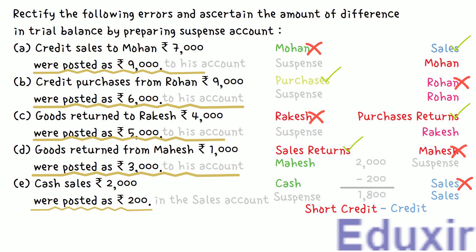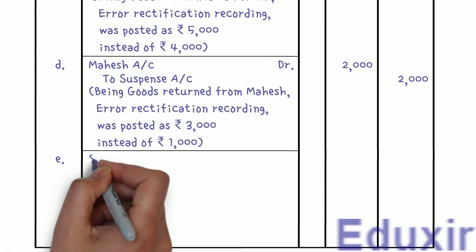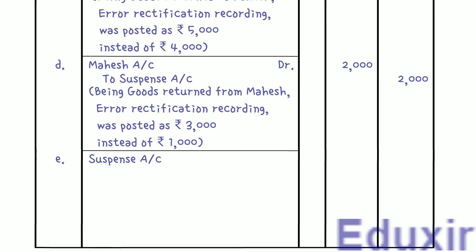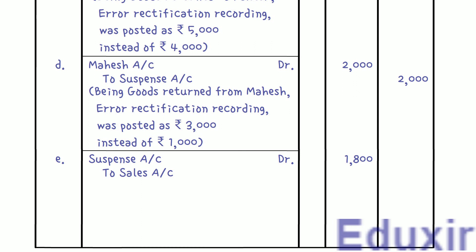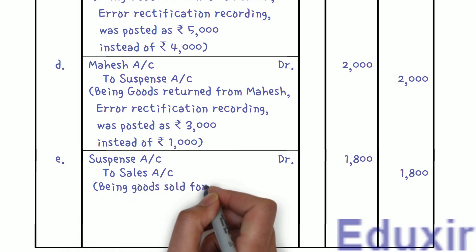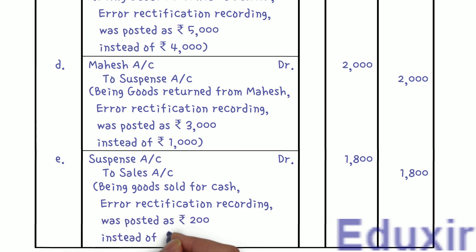Since there is a short credit, we post the rectification entry on the same side — the credit side. So we credit the sales account with 1,800 rupees. As this is a one-sided error, the suspense account is debited. Journal entry: Suspense Account Dr. 1,800 rupees; To Sales Account 1,800 rupees. Narration: Being goods sold for cash — error rectification recording — was posted as 200 rupees instead of 2,000 rupees. We have now completed all error rectification journal entries.